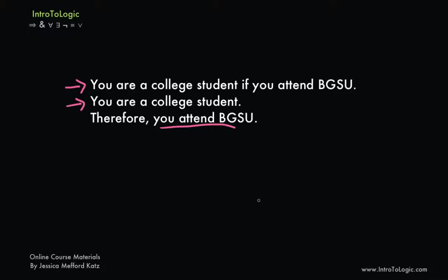It could be the case that premise one — if you attend BGSU, then you are a college student — and premise two — you are a college student — are both true, but the conclusion is false. It may be the case that you're a college student because you attend a different school in the area. Maybe you go to Toledo, or Ohio State, or Michigan, or what have you. So we know something fishy from the very beginning.